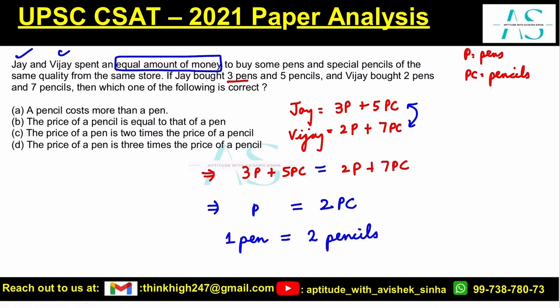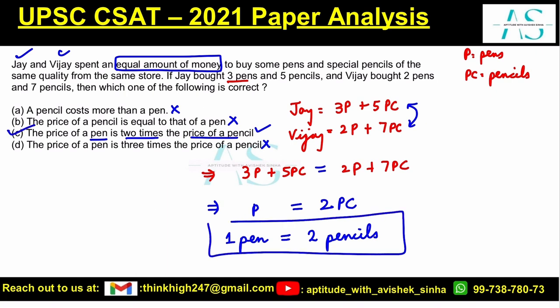Now let's evaluate the statements. Statement one: a pencil costs more than a pen — absolutely false. A pen costs more than a pencil. Statement: the price of a pencil is equal to that of a pen — no. The price of a pen is two times the price of the pencil — absolutely correct. The price of a pen is three times — absolutely false. Option C is the correct answer.